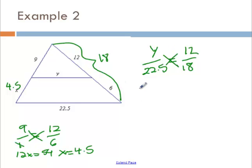I'm going to cross multiply here. 18 times y, that's just 18y. And when I take 22.5, multiply by 12, I get 270. Divide by 18, I get that y is 15.